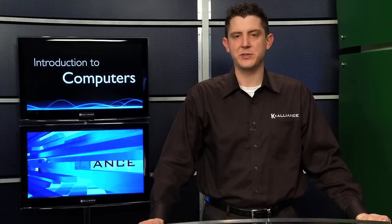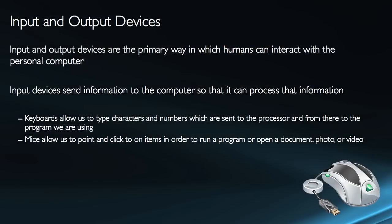Contrary to the opinion of some, the computer is not going to do anything without me telling it what to do. And so if the computer performs some action, that means something told it what to do. It may not have been you — it may have been a program that you installed. In other words, computers don't just do things on their own. Input and output devices are the primary ways in which humans can interact with the computer system.